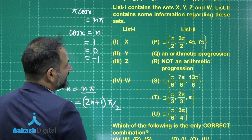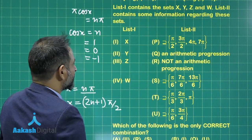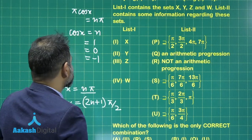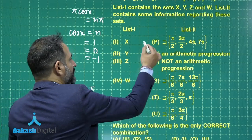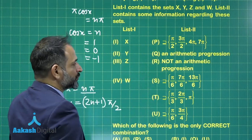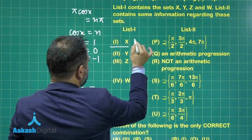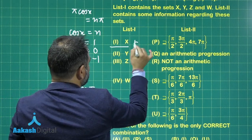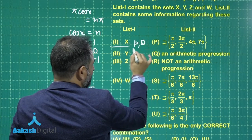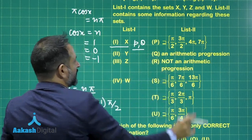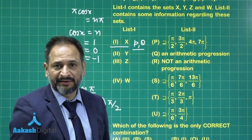You can easily see which options are correct here — it is simply option P and option Q. So X matched to P and Q are definitely the correct options. Let us check again for Y.